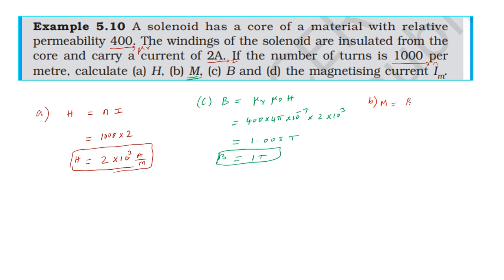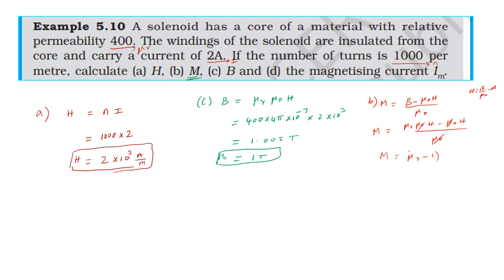For M, the magnetization: the formula is M = B/μ₀ − H, which is equation 5.15. Simplifying: M = (μr − 1) × H, where μ₀ cancels out, giving M = (μr − 1) × H.